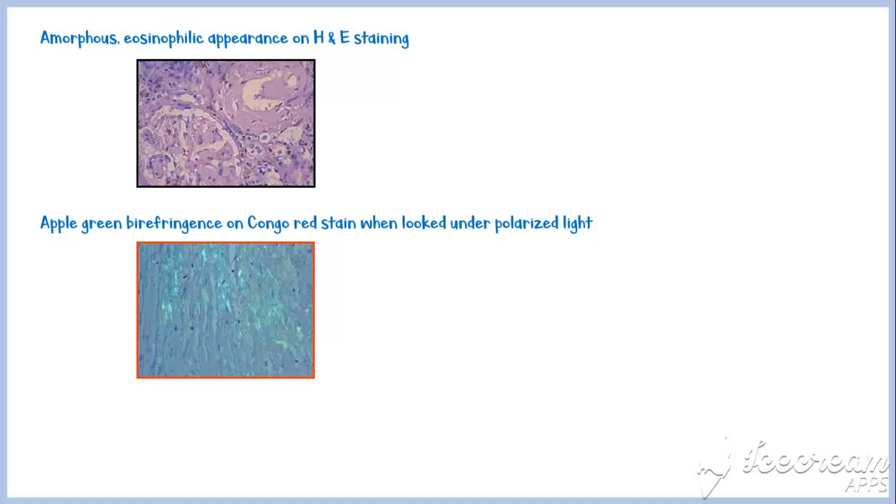Amyloids have an amorphous, eosinophilic appearance on H and E staining. And they give an apple green birefringence on Congo red stain when looked under polarized light. And another most important feature, that they are resistant to digestion by enzymes.